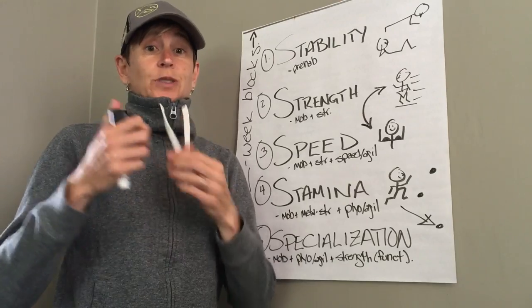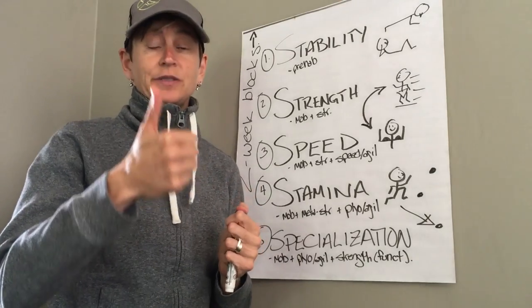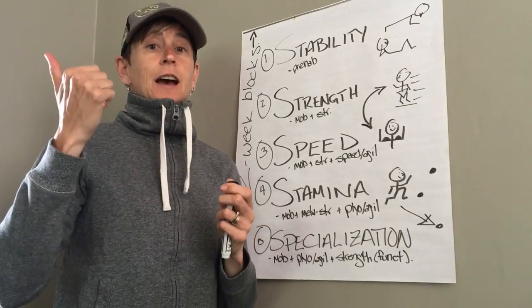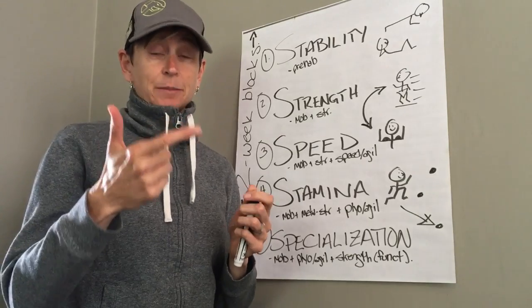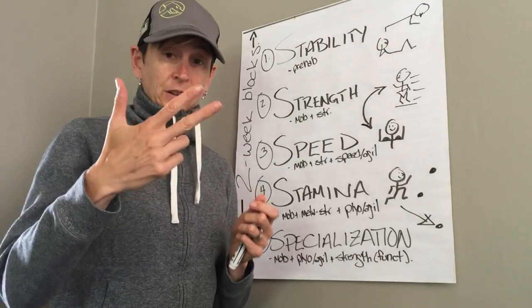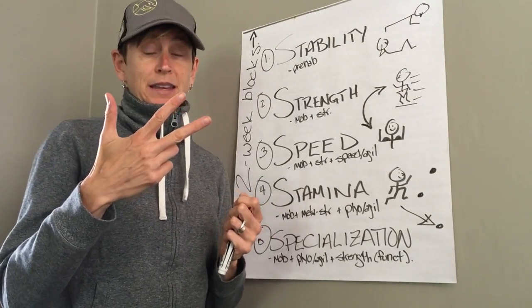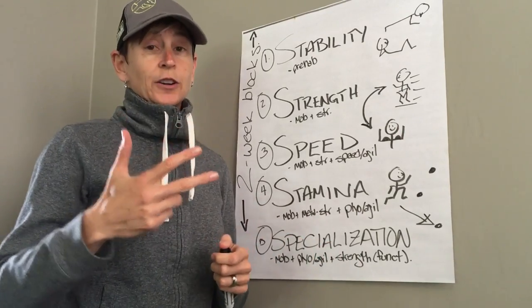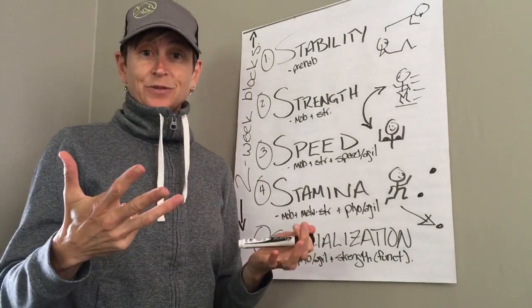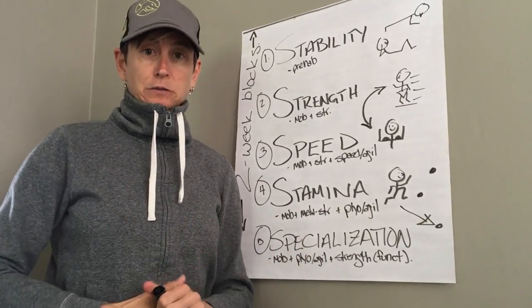Speed is a combination of a lot of things. First, you have to be able to move. If you can't move, you're not going to be fast. You have to be able to stabilize. If you can't stabilize, you're not going to be fast. Building your strength is the number one way we can make you faster, so we need to make you stronger.